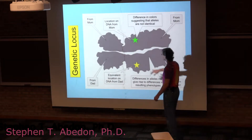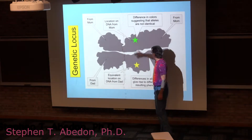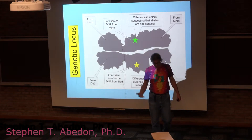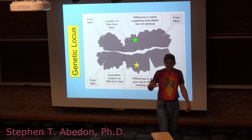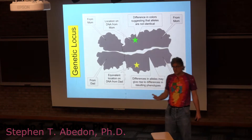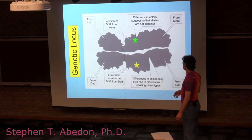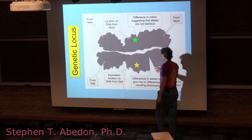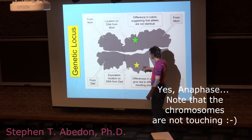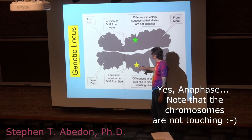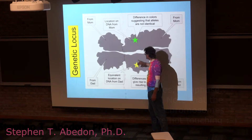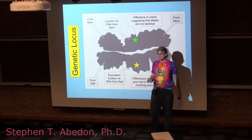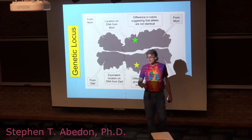This is again showing you've got a locus, which is the position on a chromosome. These are showing essentially anaphase chromosomes. You've got a chromosome that came from mom and a chromosome that came from dad.